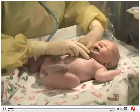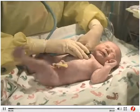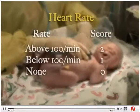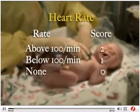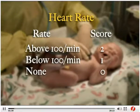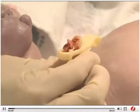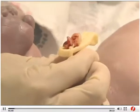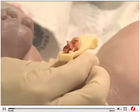Auscultate the apex of the heart to determine the heart rate. If the rate is above 100 per minute, give the infant a score of two. If less than 100, a score of one, and zero if there is no heart rate. Heart rate can also be assessed by palpating the umbilical cord.